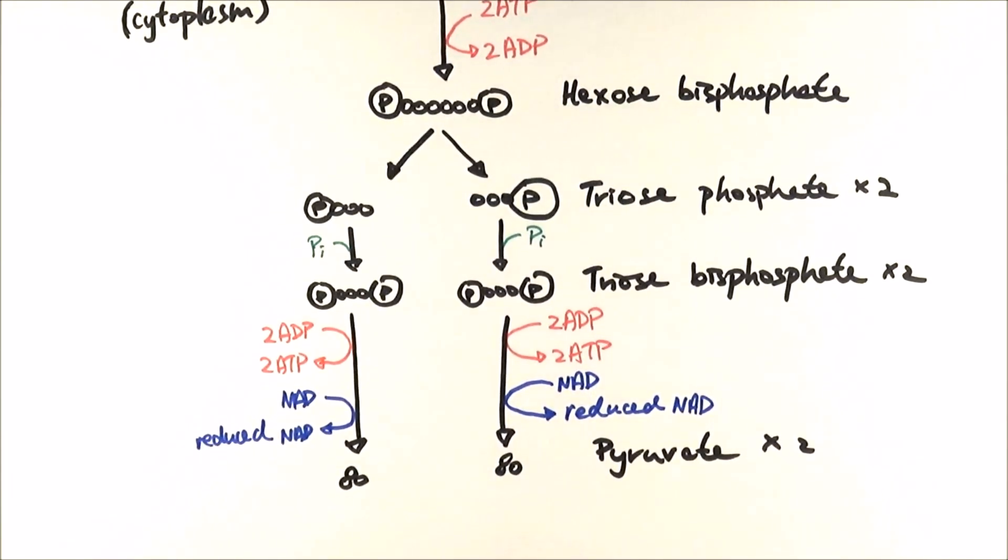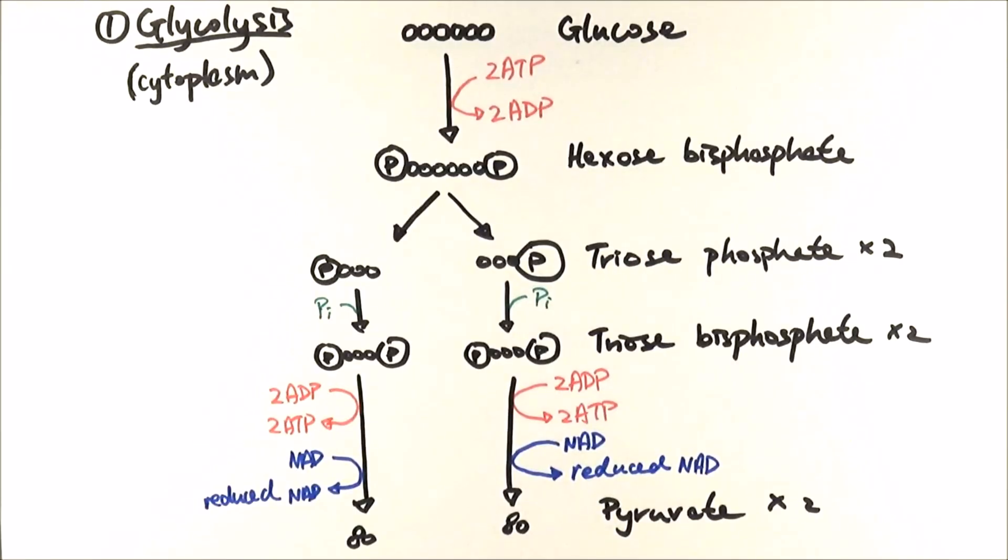We need to consider some of the reactions here. In particular, from photosynthesis you probably have remembered there is something called photophosphorylation, where we use light to phosphorylate ADP to make ATP.